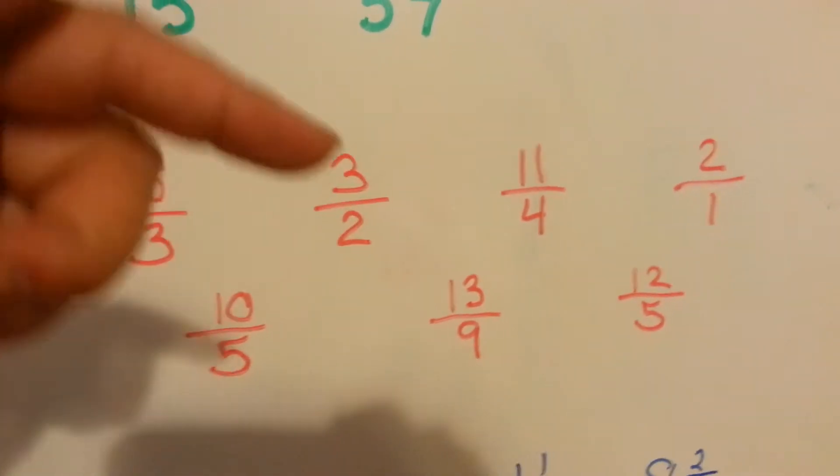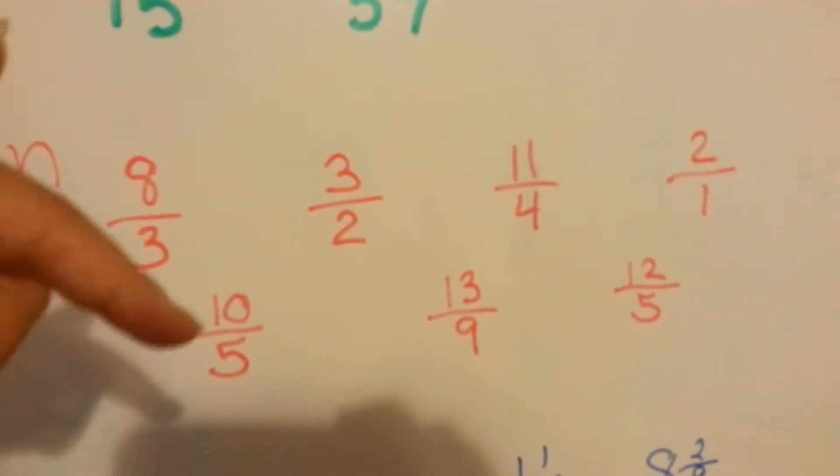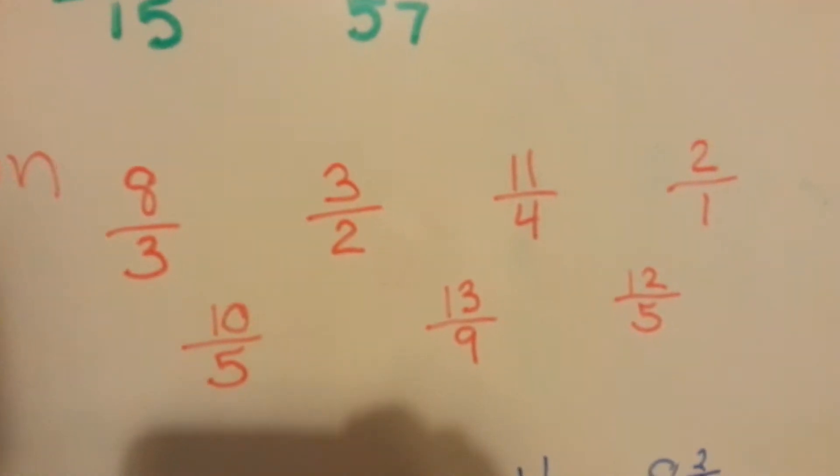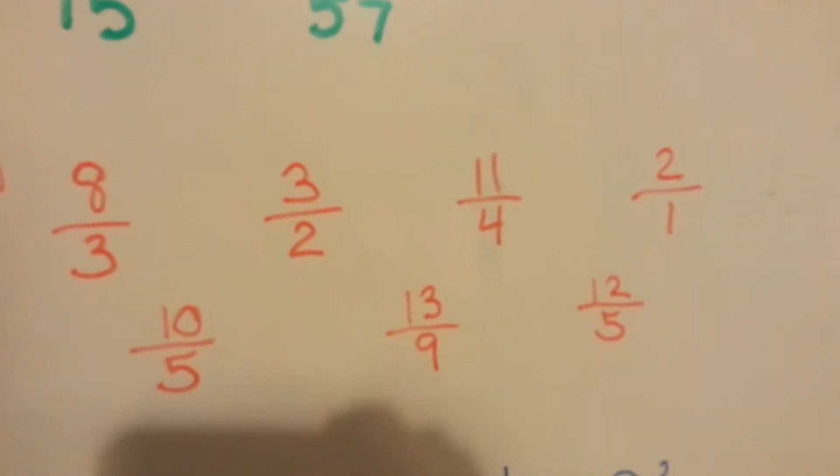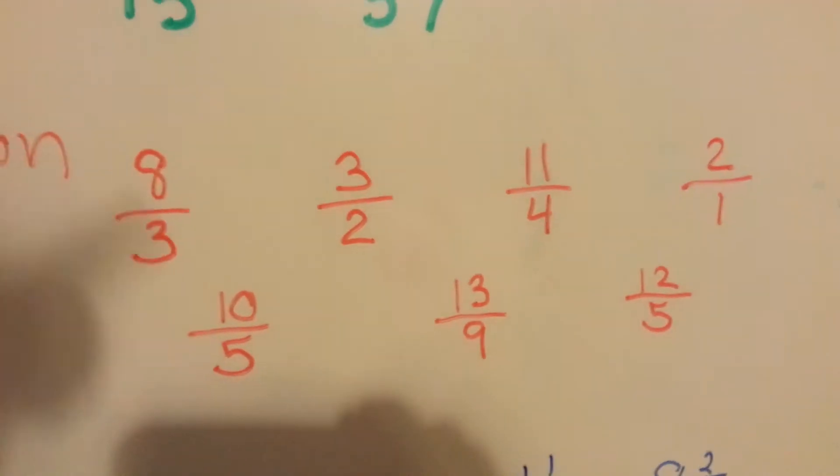These are improper fractions. See how the tops are bigger than the bottoms? These are all improper because the numerators are too big. Sometimes people call these umbrella fractions because the top is so big and the bottom is small.